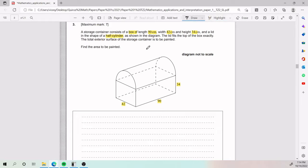And that the total exterior surface of this storage container is to be painted and to find the area to be painted. So, if the total exterior of the storage container is to be painted, then we are talking about the surface area.